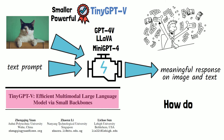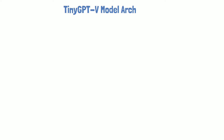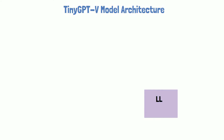In this video we'll explain the TinyGPT-V paper to understand how this model was created and how it performs compared to other models. Let's start by reviewing the model architecture. The secret sauce that helps this model achieve good results while being relatively small is by using the PHY2 model as its large language model backbone.